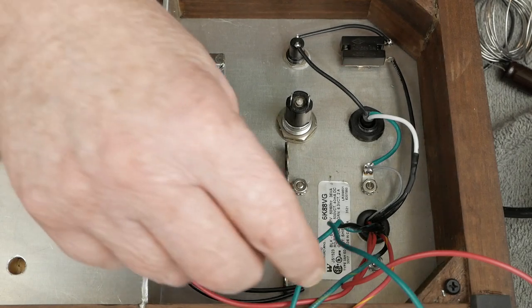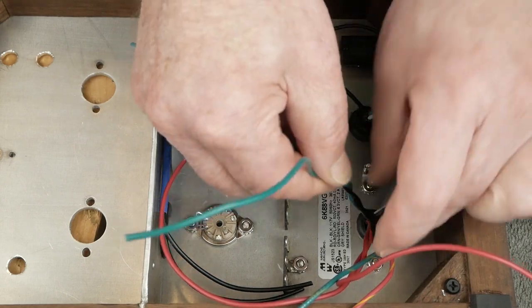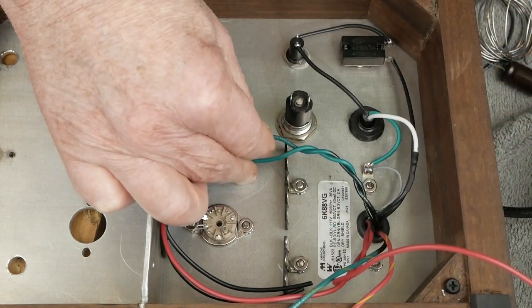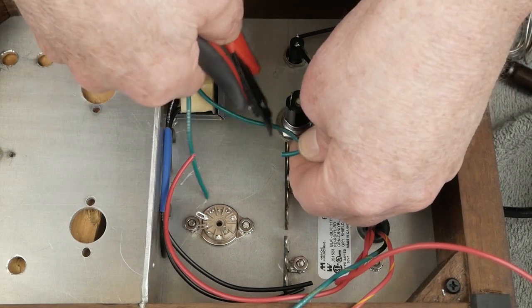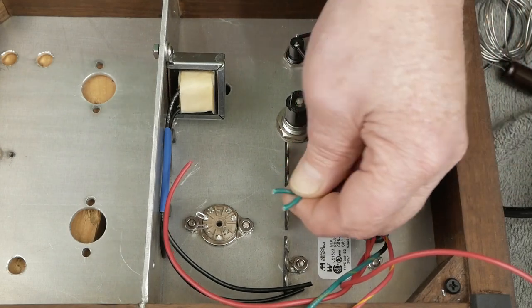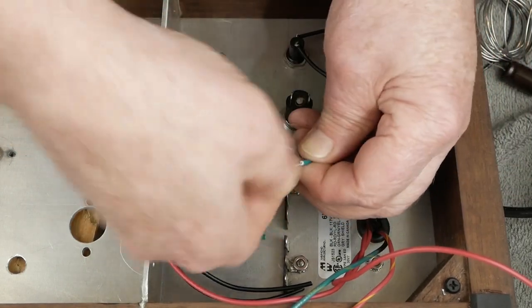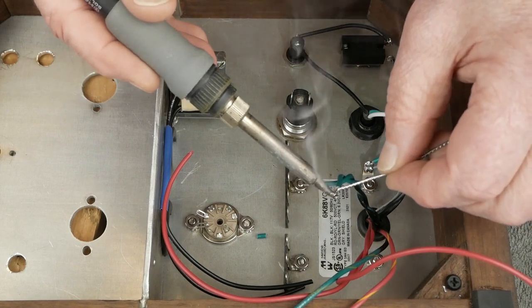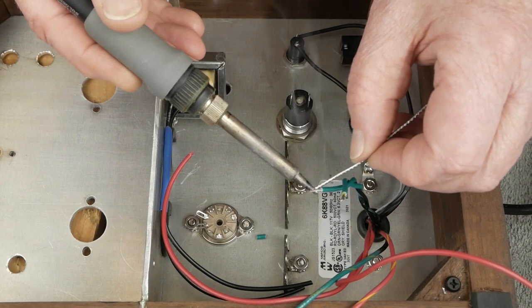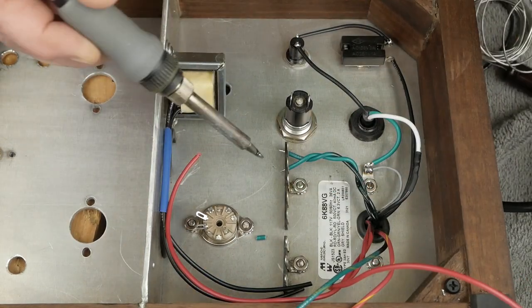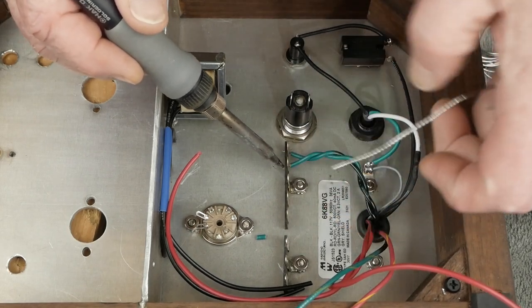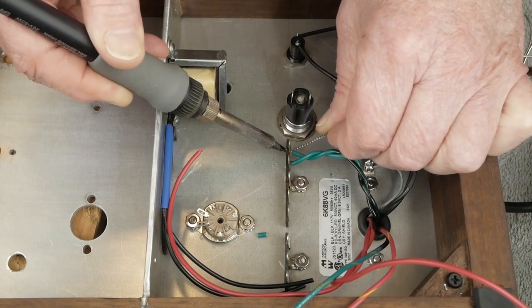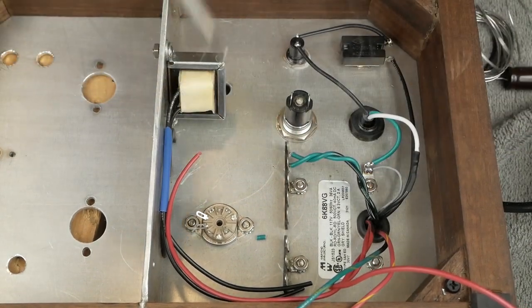Next thing we have to do is we got our 6.3 volt heater wires. We want to make sure these are twisted up. We're going to bring them over to this tag strip. I think I'm going to solder them into these lower holes here. We don't need to strip off a lot of wire. Twist these up. And then I'm going to go ahead and tin these leads so we don't have to worry about the stranded wire, a little piece getting stray and causing problems. And solder them to this lower hole in this tag strip just like that.